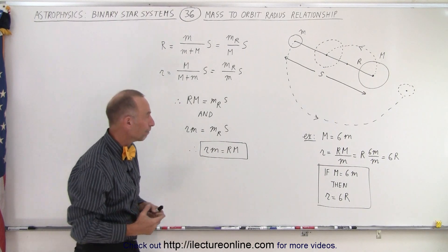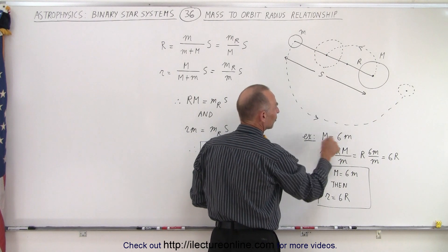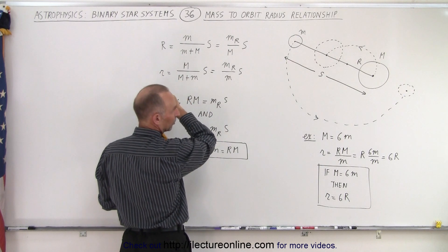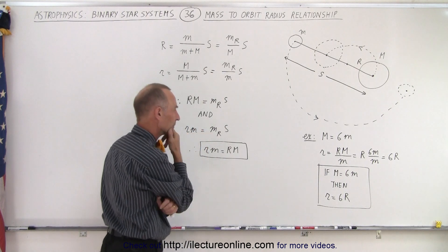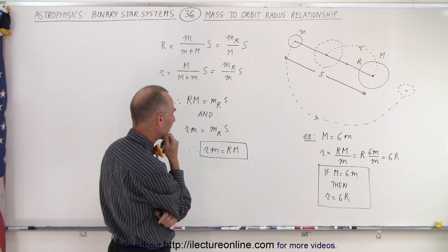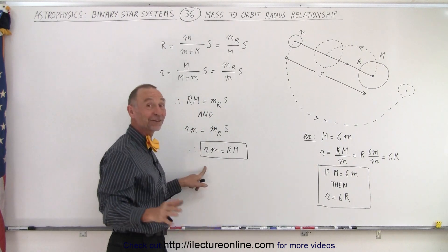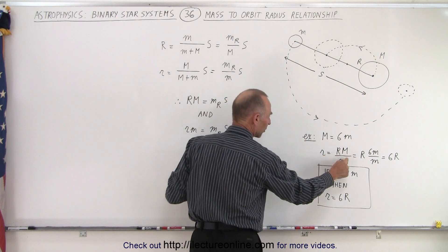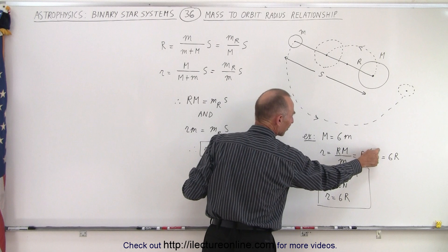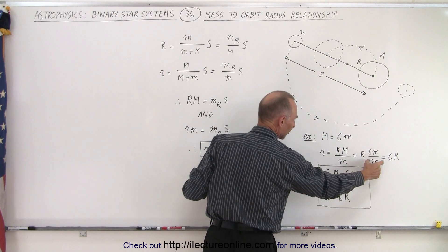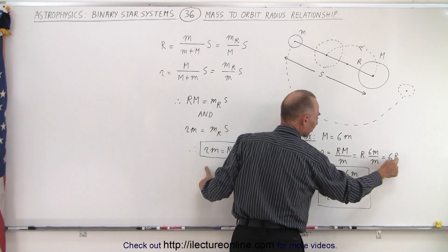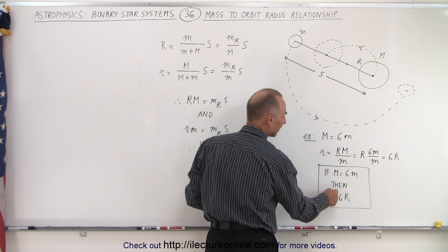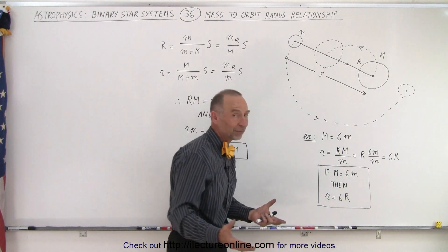For an example, let's say the large mass equals 6 times the small mass. Taking the equation R·M = r·m and dividing both sides by small m, we get small r equals large R times large M over small m. That is R times 6 times the small mass — which equals the large mass — divided by small m. The m's cancel, so small r equals 6 times the radius of the large object. If the mass of the large object is 6 times the mass of the small object, then the radius of the small object is 6 times the radius of the large object.